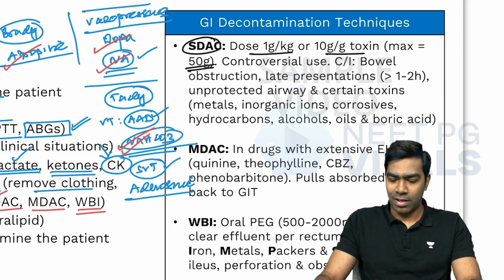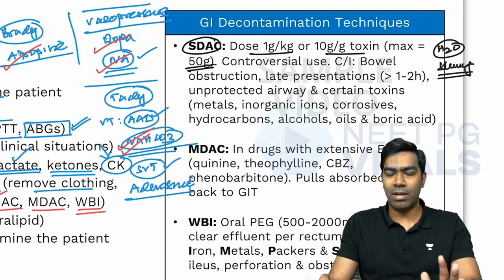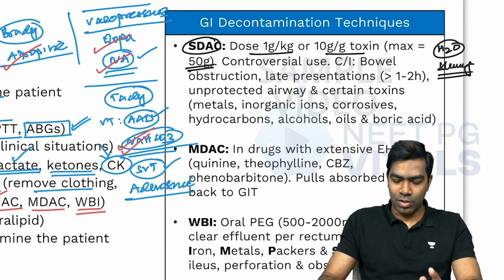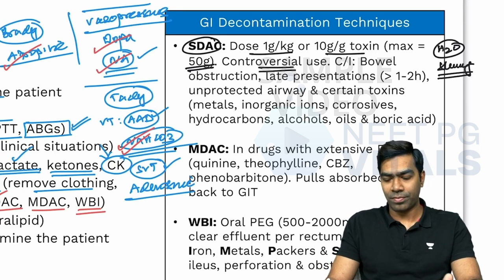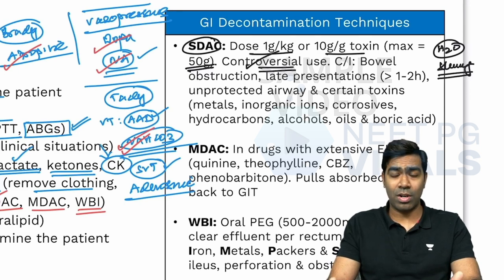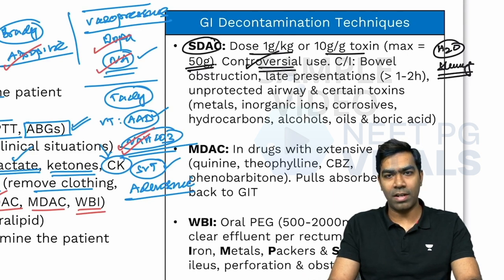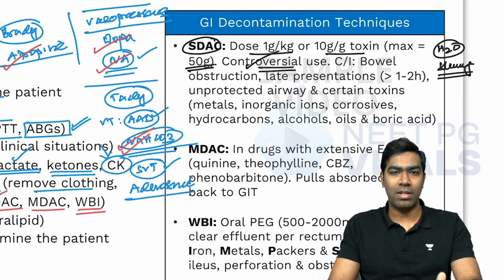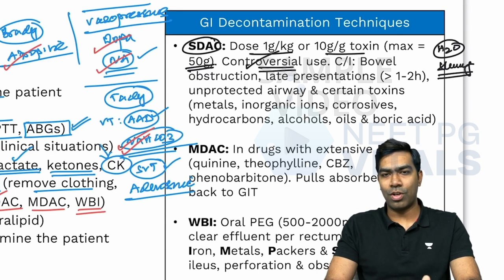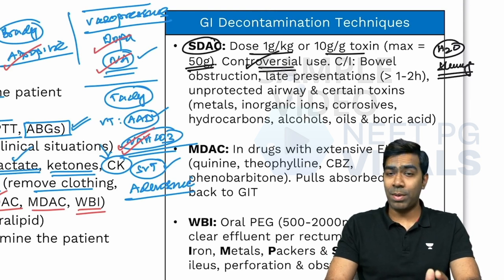Its use is somewhat controversial. Some researchers believe the efficacy of activated charcoal is not great — by the time you give it, most toxins have already been absorbed or passed to the distal intestine. It also increases the risk of complications like aspiration and gastrointestinal perforation. Nevertheless, it remains one of the most common techniques performed in emergency rooms, and we must be aware of contraindications.